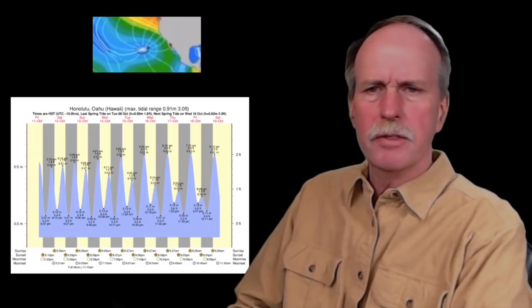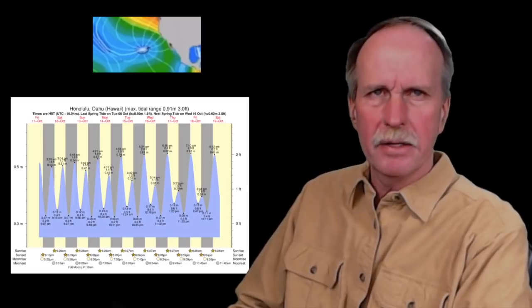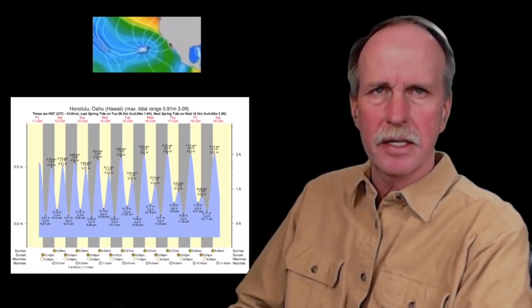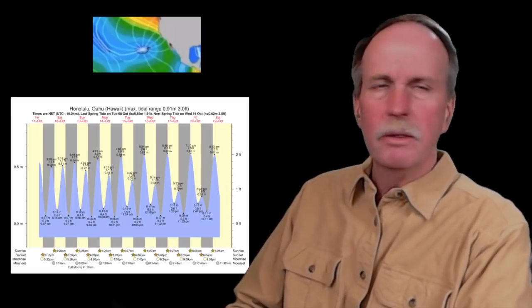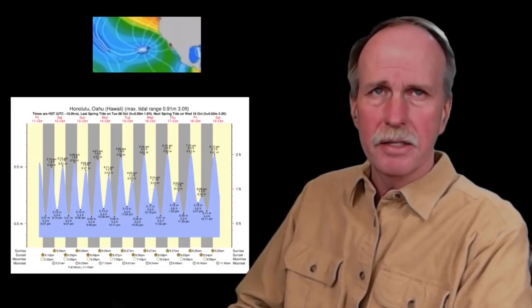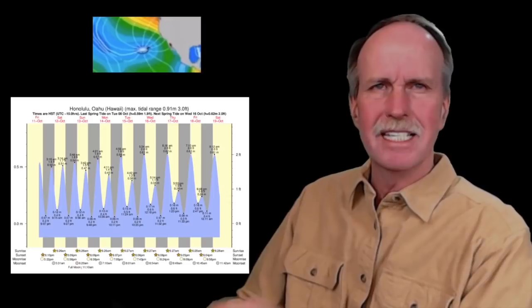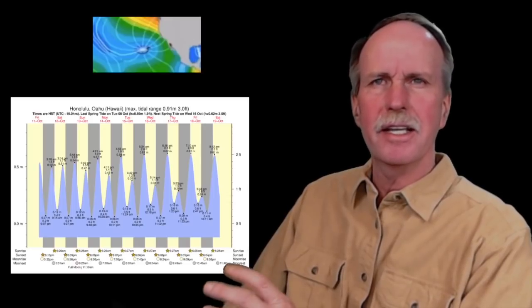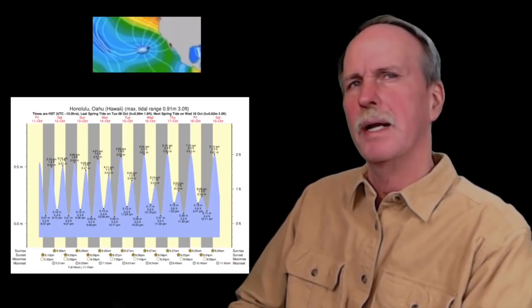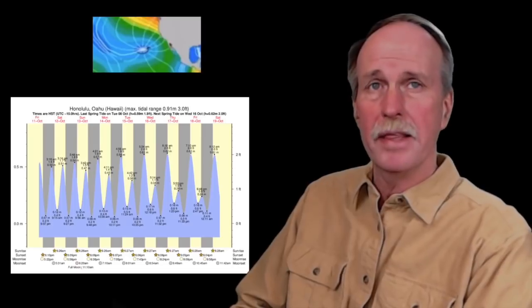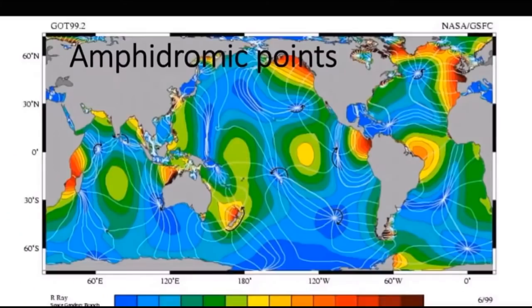For example, this is an amphidromic point centered on the Hawaiian Islands off the western coast of the United States. Honolulu, Hawaii clearly has tides. So it's not that these points are zero tide — it's that they are lower tides than the surrounding areas. And then we'll talk about why that is. These are the places, these points, where there is no tide — literally no tide at all — and there are tons of them all over this map.